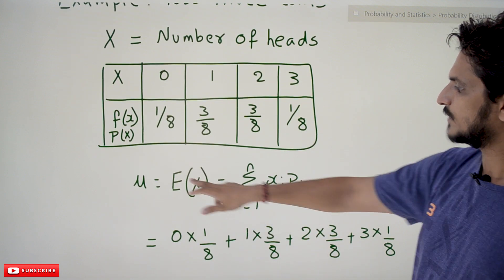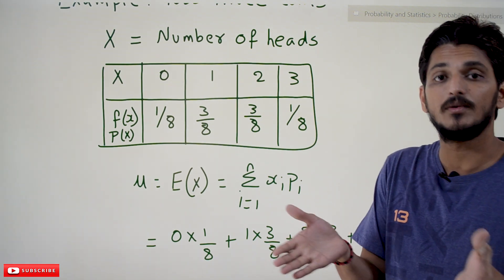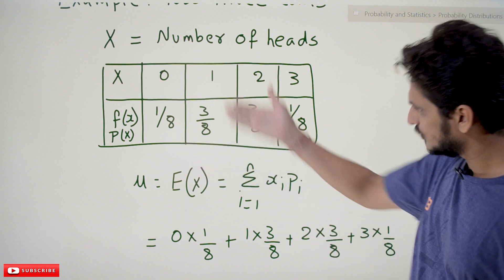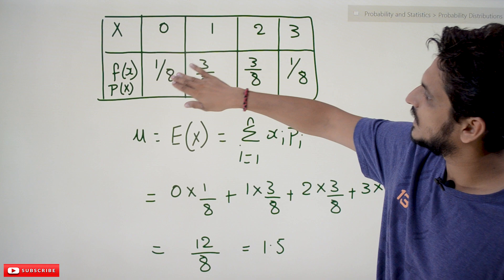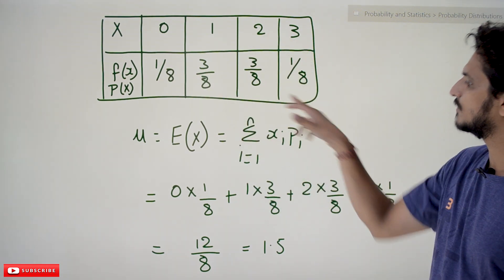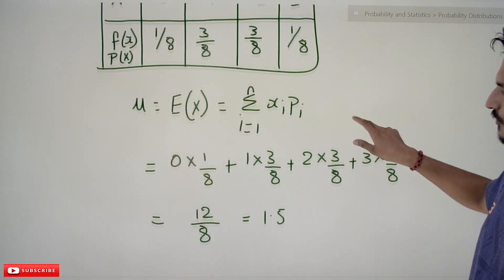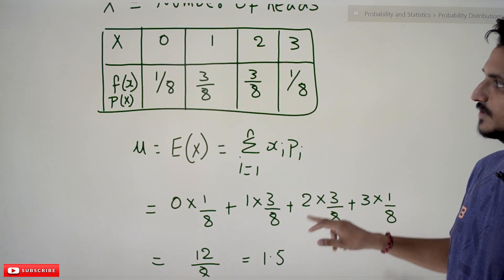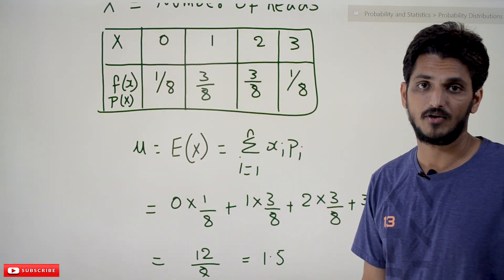So the expected value of X is the mean of the random variable — we are finding the mean of the random variable given the probability distribution. For this coin toss example: E(X) = (0 × 1/8) + (1 × 3/8) + (2 × 3/8) + (3 × 1/8). Solving this gives 12/8, which equals 1.5. So the expected value, or mean, of this random variable is 1.5.